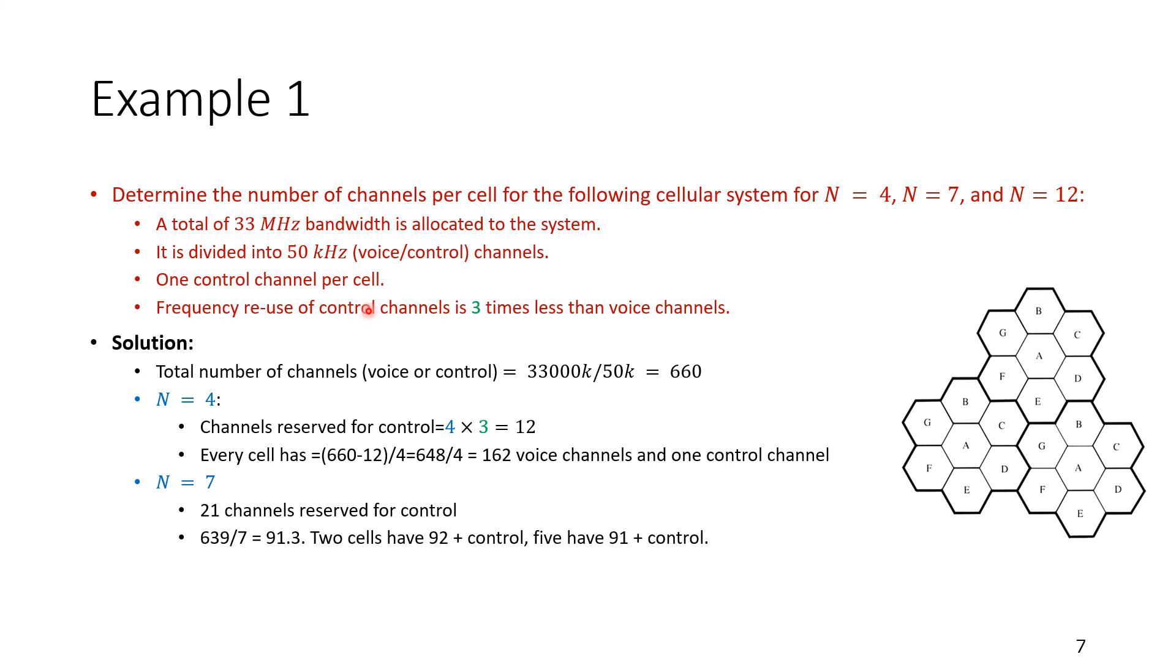For control channels, because they are important, if we lose them, we could lose the entire call. To avoid interference, we reuse them at a lower frequency. How much is that order? That's three. So let's see, how do we include this in the calculation? For the control channels, we'll avoid the repetition by a factor of three. So let's start by saying we have a total number of channels, which is 33 total bandwidth of 33,000, whether voice or control. And every one of the channels requires 50 K. So if we divide 33,000 K by 50 K, we get 660 channels.